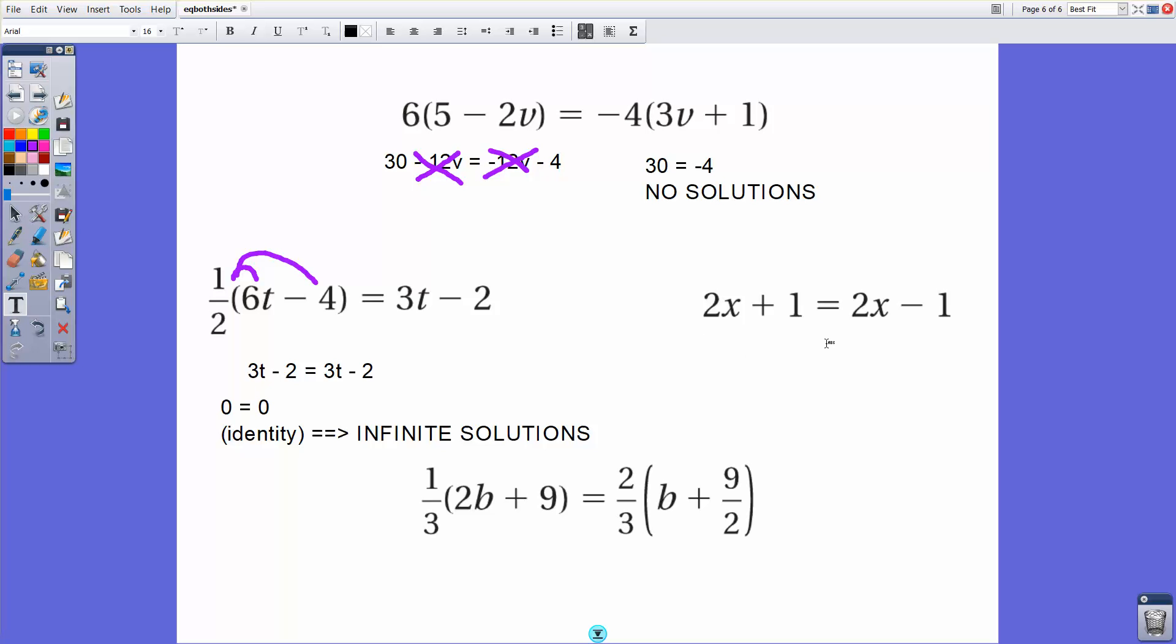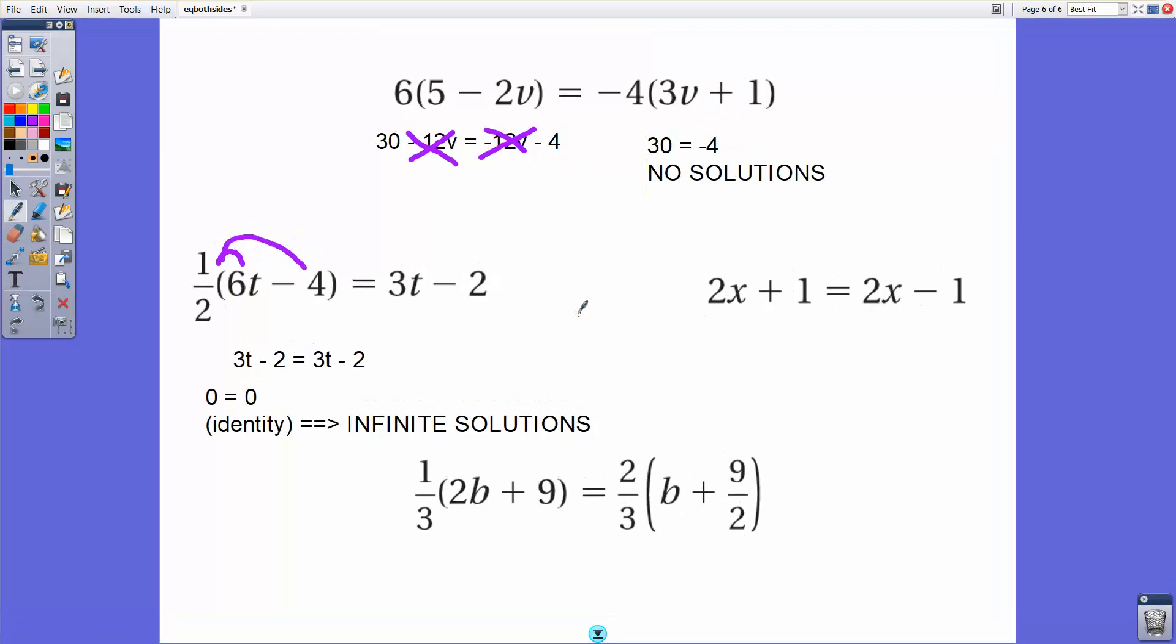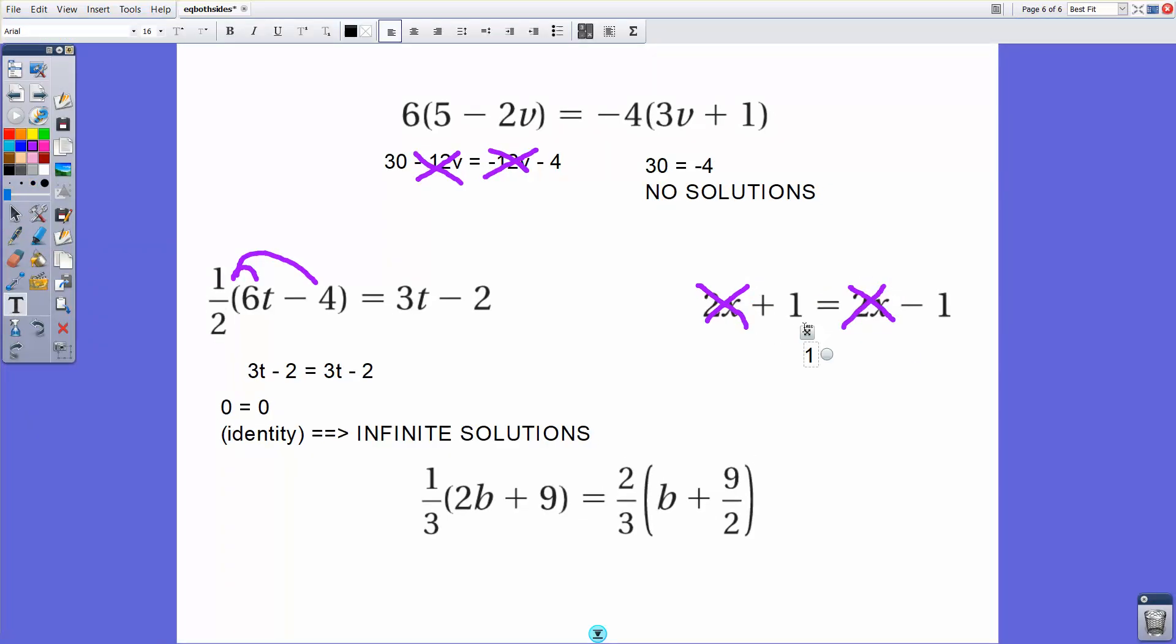The same kind of concept here, 2x and 2x are common to both sides of the equation. So we can cross both of those off. And this gives me 1 equals negative 1. 1 does not equal negative 1. So therefore, this is a no solutions situation.